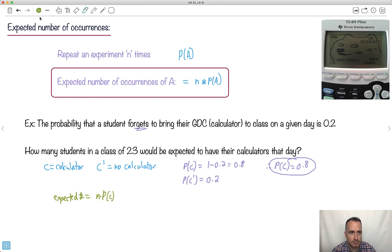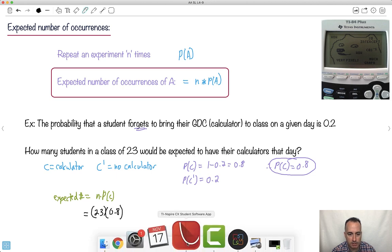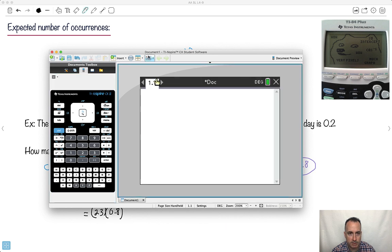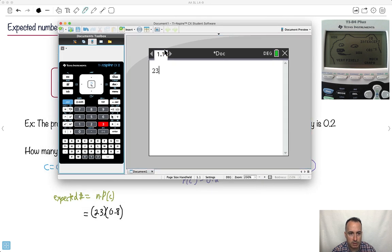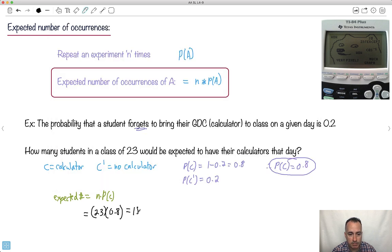All right. Well, what's N? N is the number of times I'll repeat this experiment. I'm repeating it 23 times because there's 23 students. I'm going to do that times 0.8. Well, you're allowed to use your calculator on your exam. So, let's just do that. So, what is 23 times 0.8? Oh, that gives me 18.4. Do you see that? So, all right. And this actually would be the answer. I could actually say 18.4 students.